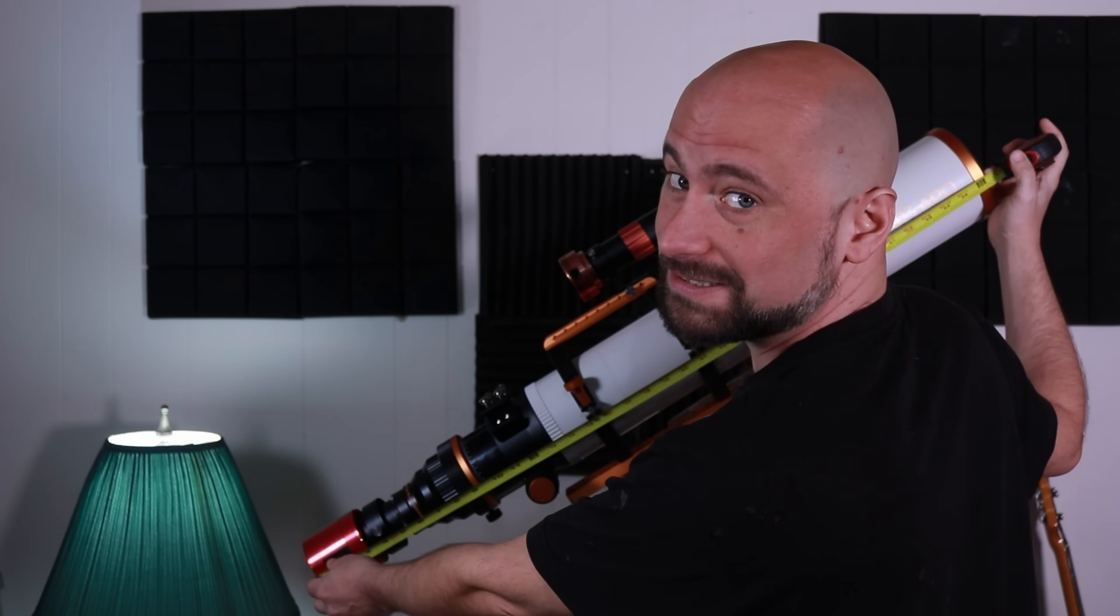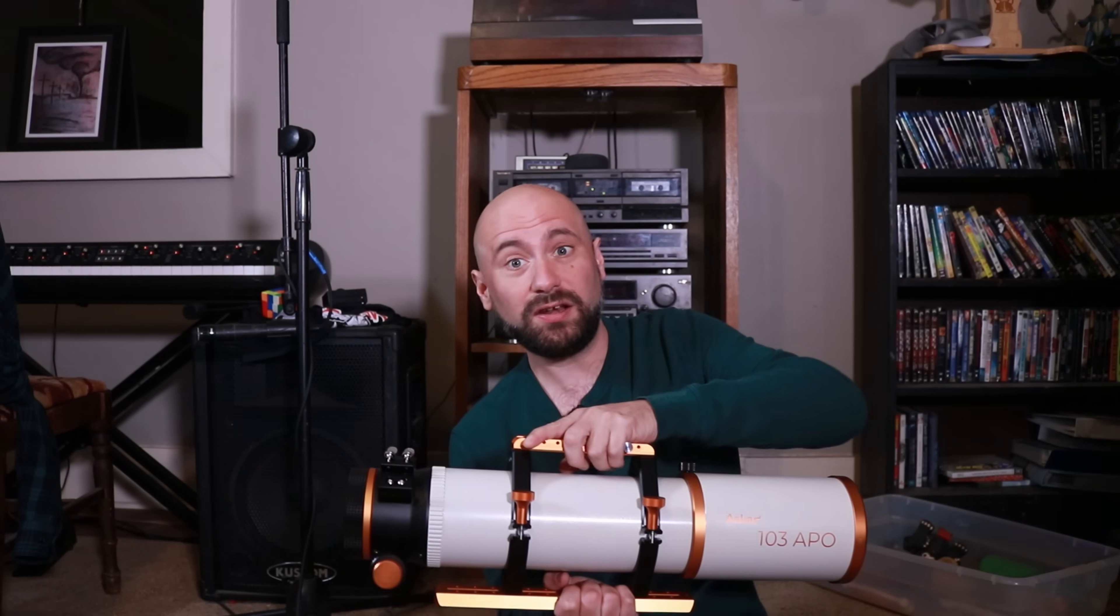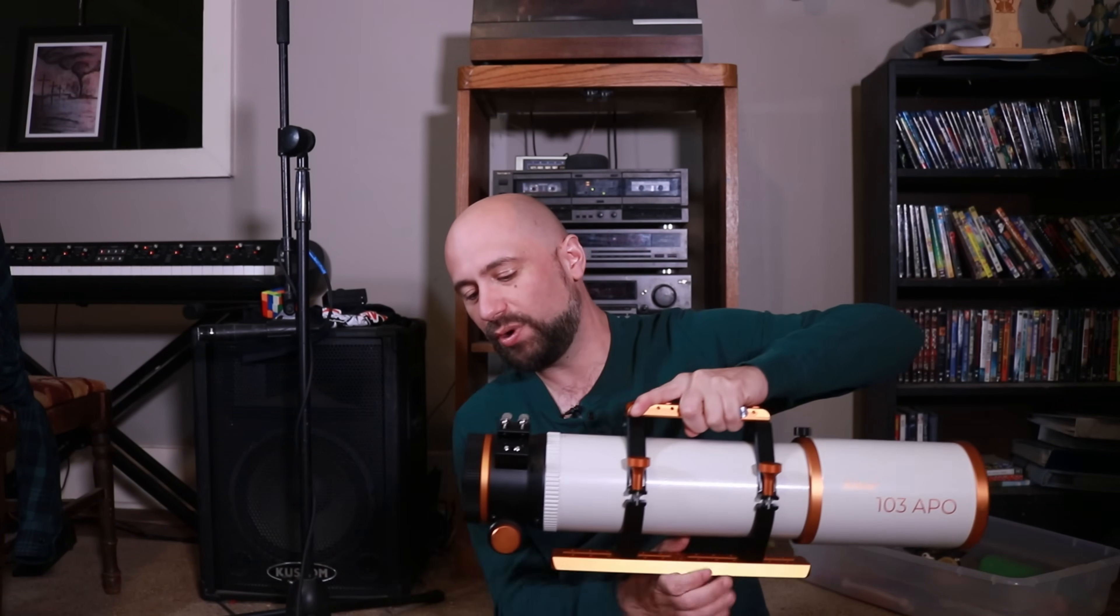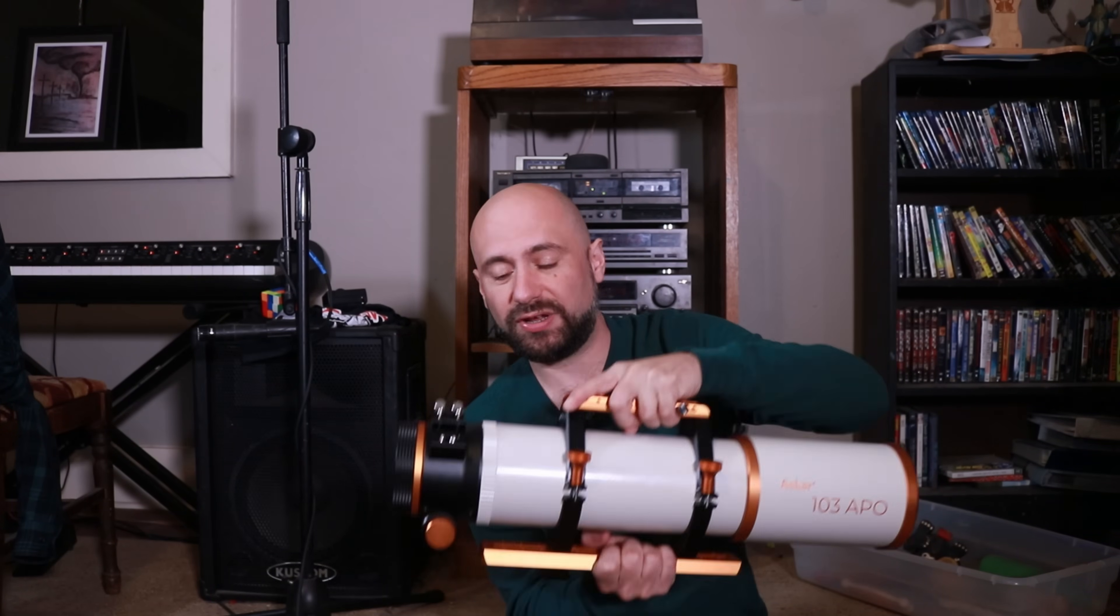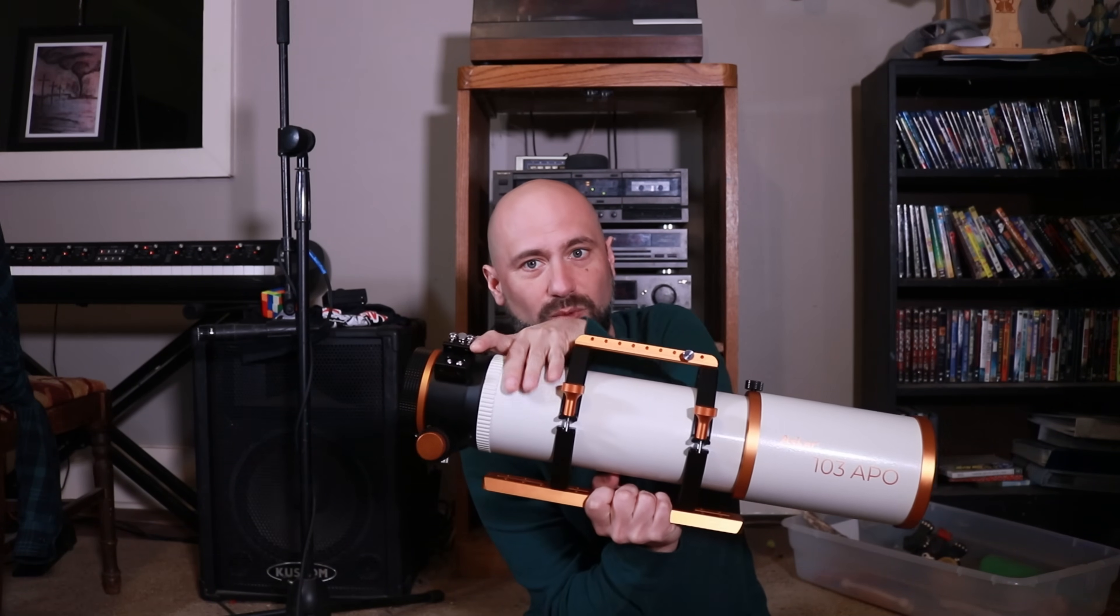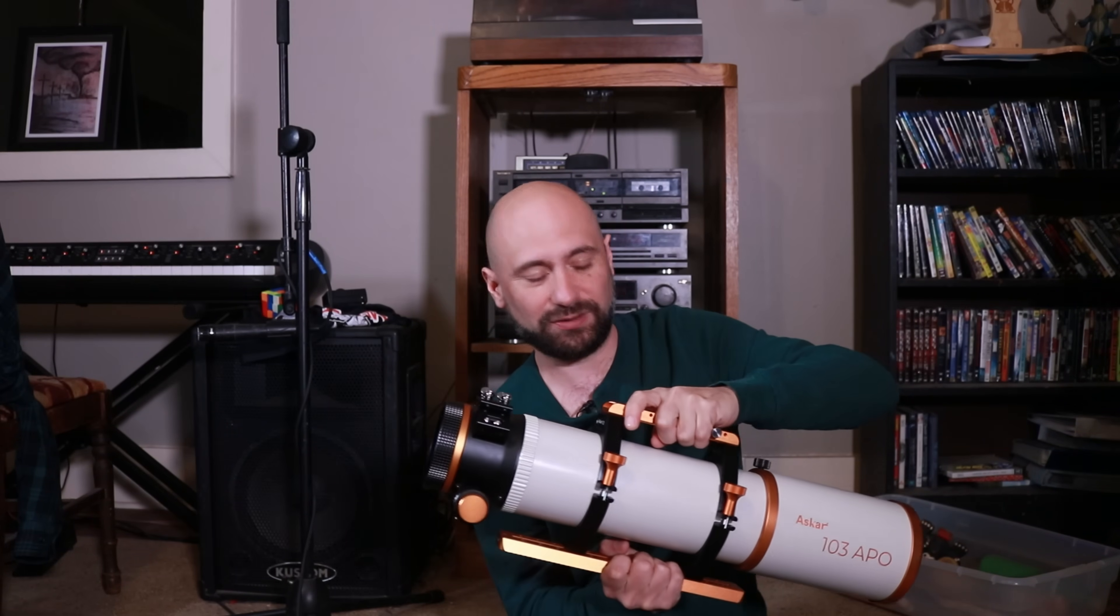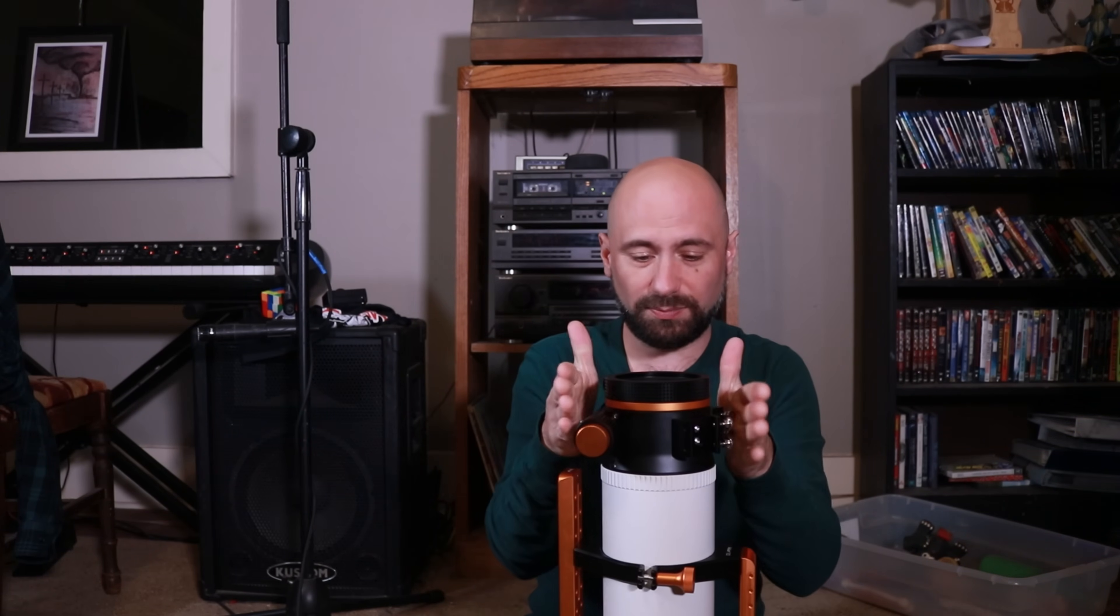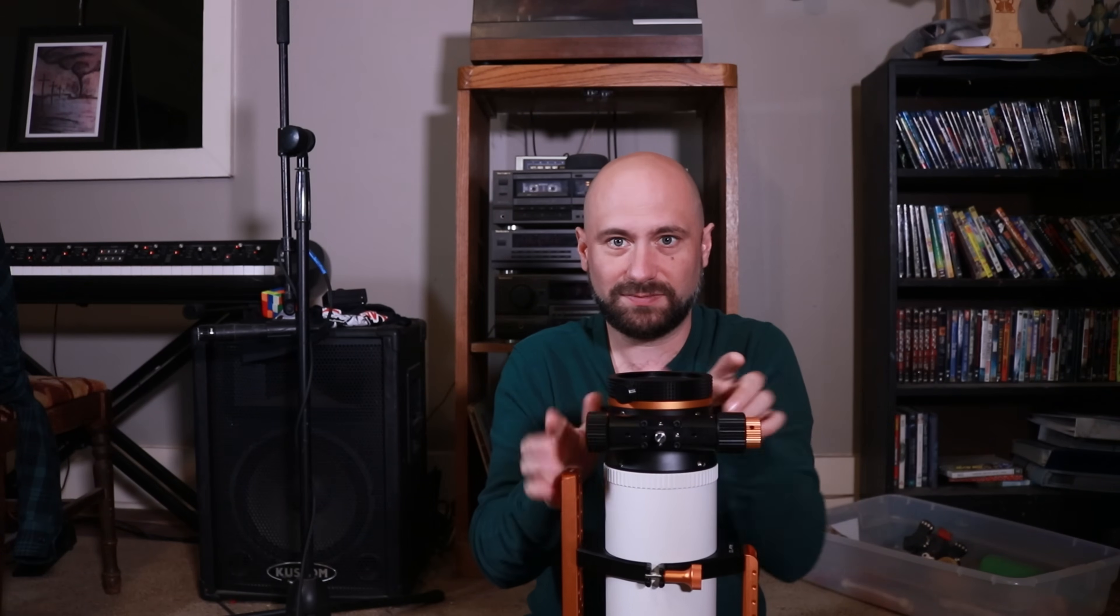One very important note about the 0.6 reducer. Unlike the flattener and the 0.8 reducer that just screw right onto the back of the telescope, to install the 0.6 reducer, you actually have to take off this piece, this white piece, right here. It has to go for that to work. And the way you do that is you unscrew the black section, the focuser and rotator section.